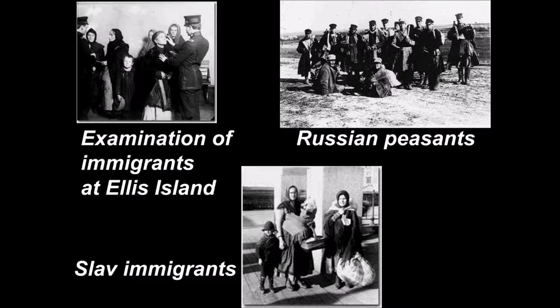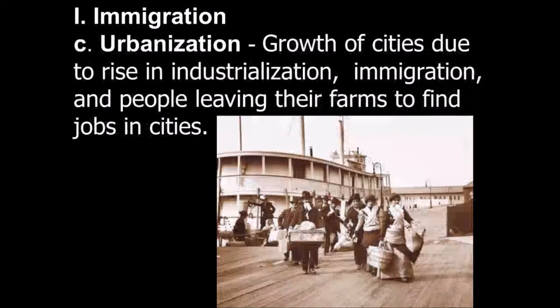Now let's talk about Ellis Island. These are pictures of immigrants being examined. In the top right corner, you're seeing Russian peasants. The peasant class in Russia was gigantic because it hadn't been much more than 50 years since there were serfs — Russia kept that feudal system in place for a very long time. These peasants were borderline freed slaves as far as their ability to work, get education, and have money. At the bottom, we have some Slavic immigrants.